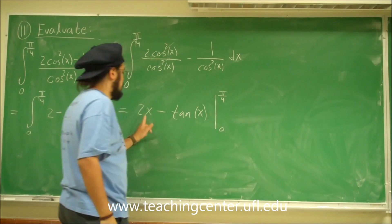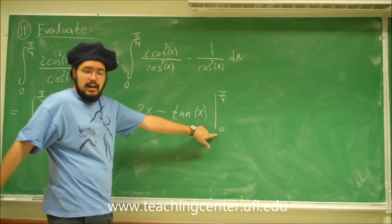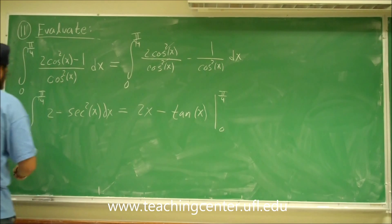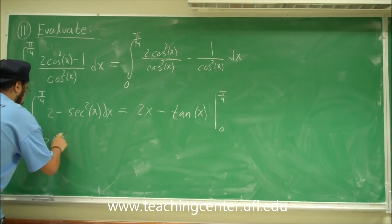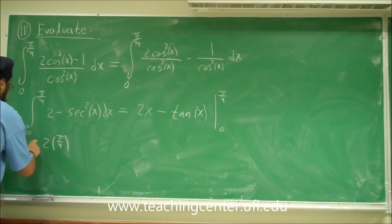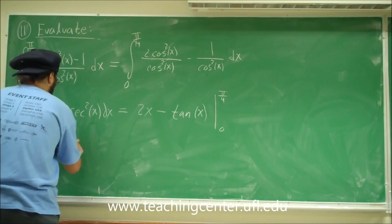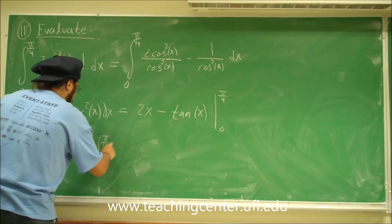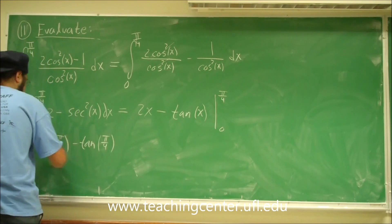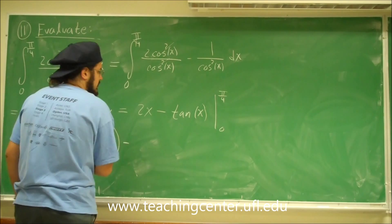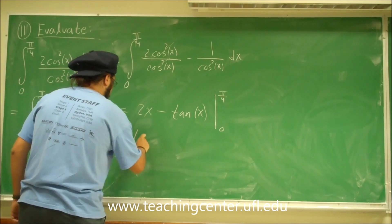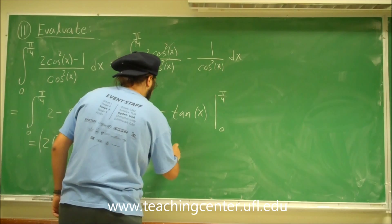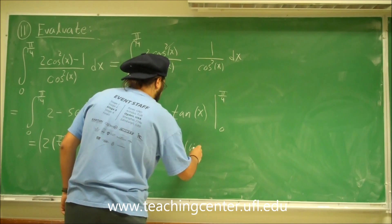So first plug in pi over 4 into the x and then subtract it by whatever the 0 is. So we'll have 2 times pi over 4 minus tangent of pi over 4. So all this minus. Now plug in 0. So we have 2 times 0 minus tangent of 0.